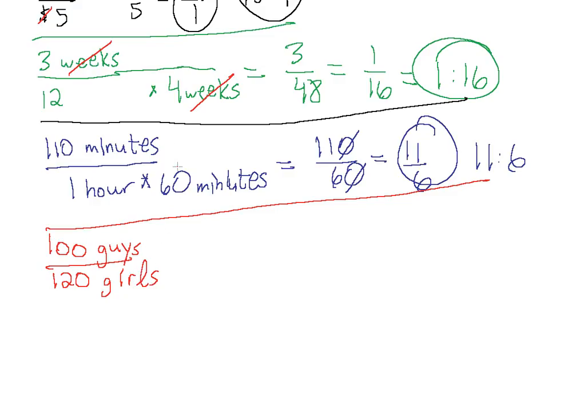This is called qualitative. Minutes, weeks, hours, dollars, those are all quantitative values. So when we're talking about something like guys and girls, we actually can't convert guys to girls. I hope you realize that. So we don't need to worry about converting here.